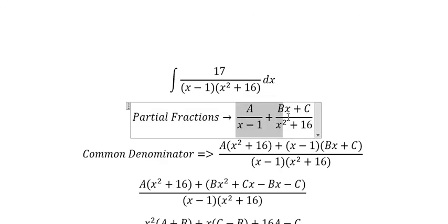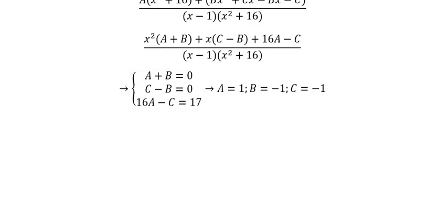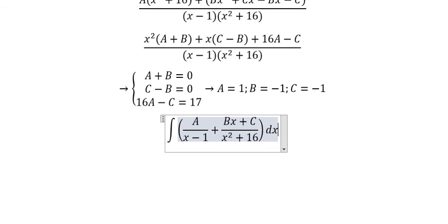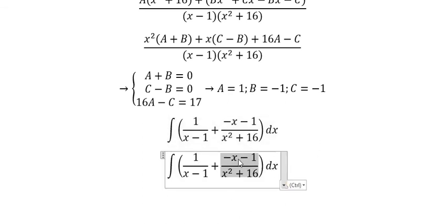So we put everything in here. A is about number 1. B is negative number 1. C is about negative number 1. So we can divide this fraction into two fractions.